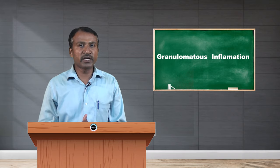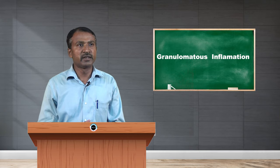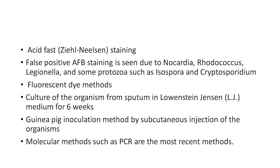Other stains used to identify tuberculosis bacteria include acid-fast staining, also called ZN staining or Ziehl-Neelsen staining. Sometimes false positive acid-fast bacillus staining occurs due to the presence of Nocardia, Rhodococcus, or some protozoa such as Isospora or Cryptosporidium. Fluorescent dye methods can also be used.